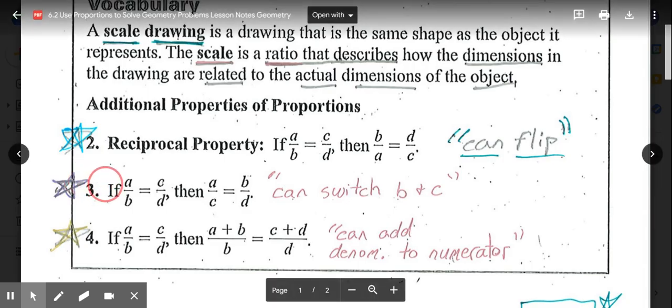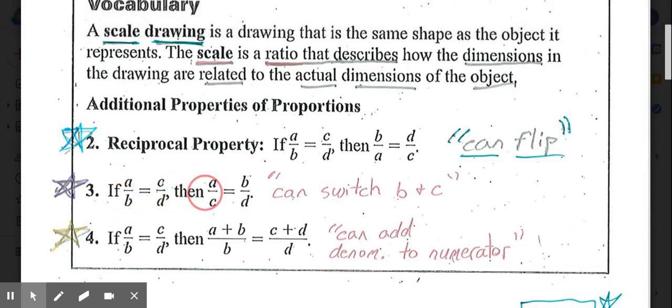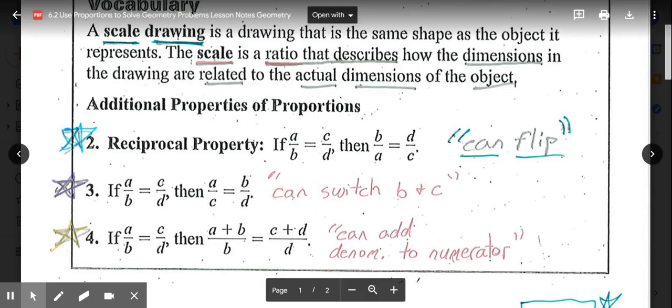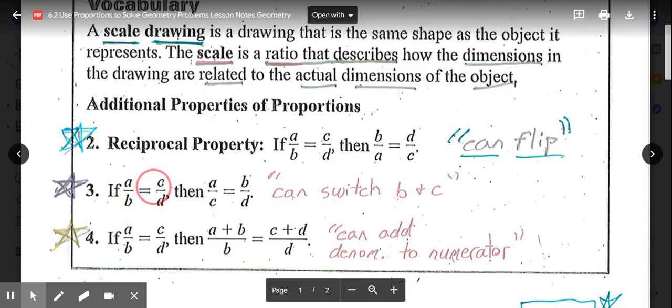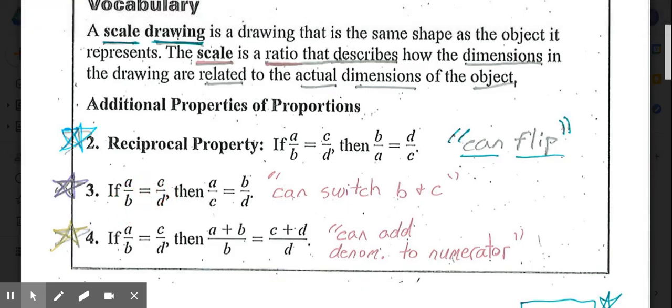Then we have a third property here overall, which states if a/b = c/d, then a/c = b/d. This one says we can switch b and c, so we can exchange diagonally b and c, and those would still be the same or equal proportions.